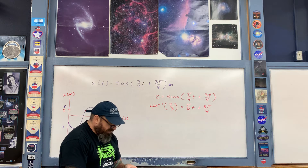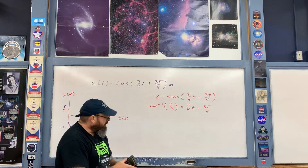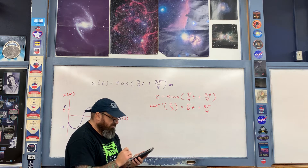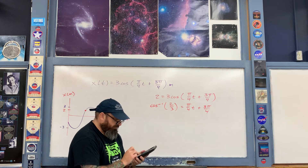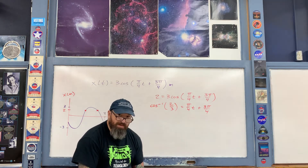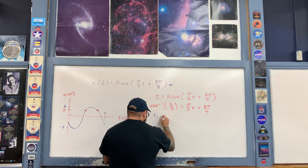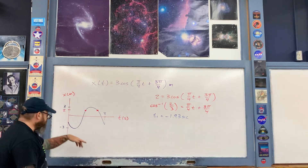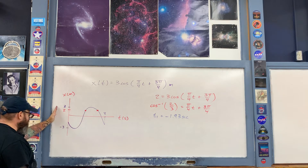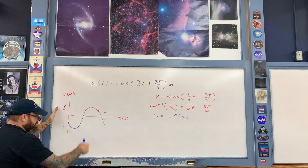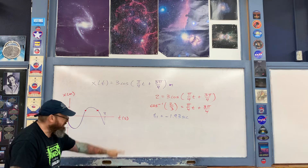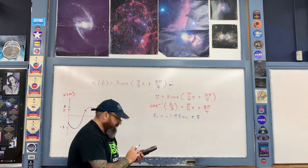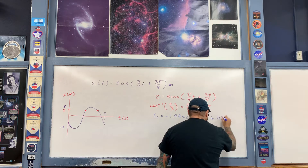The negative sign means the time is on the left-hand side of the vertical axis. To move it to the right-hand side, we don't add 2π radians — this is time in seconds — instead, we add a full period of 8 seconds. Adding 8 to negative 1.93 gives a time of 6.07 seconds.